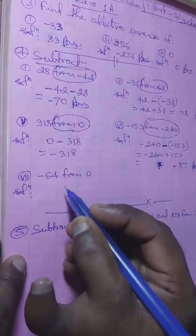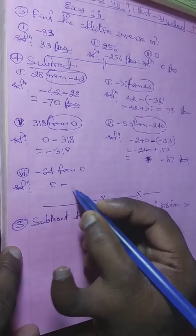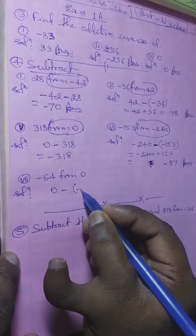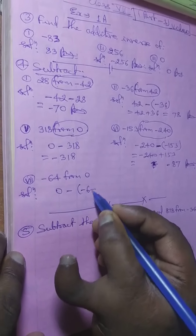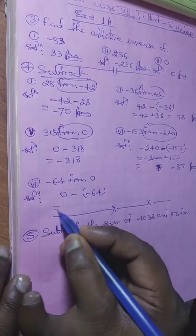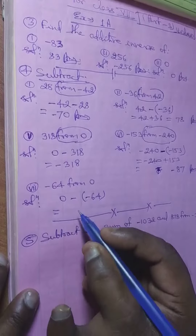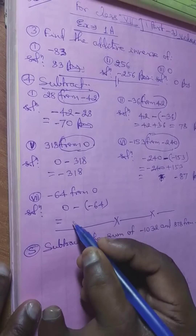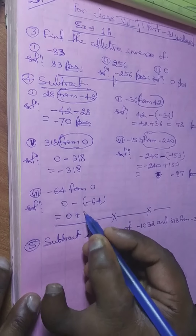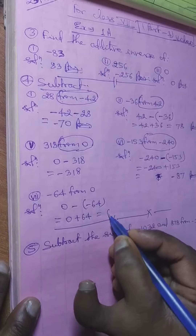From 0, subtract minus 64. Before 64 a negative sign is given, so 0 minus minus 64 becomes 0 plus 64. The answer is 64.